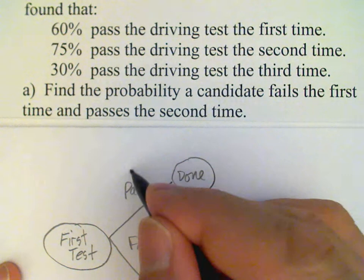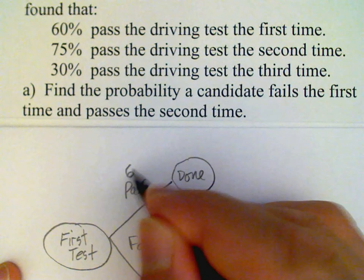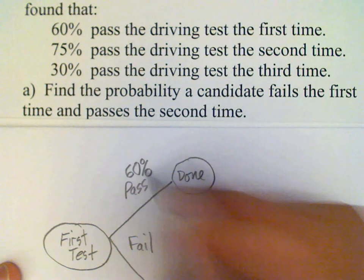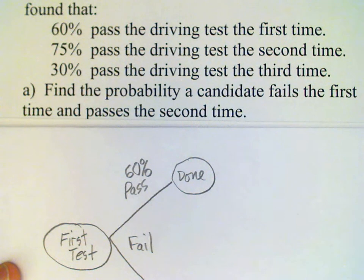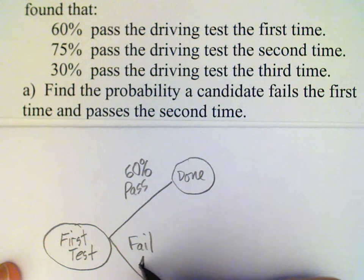We know that a candidate's passing at 60% on the first try, and so what does that mean for this branch? What percent are going to fail? I can hear most of you out there saying 40%. That is right. If they don't pass, then they fail.